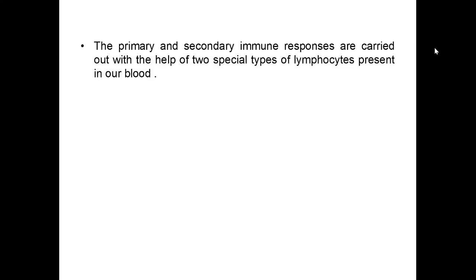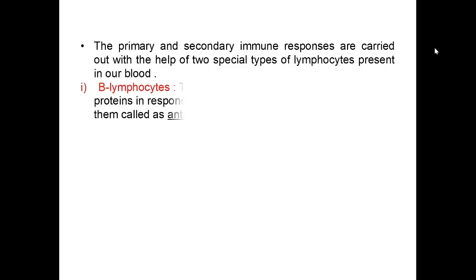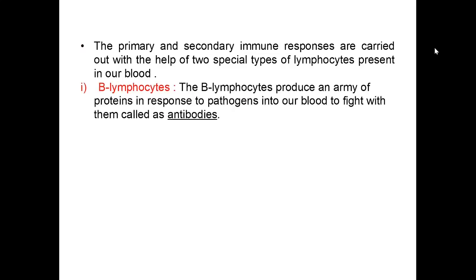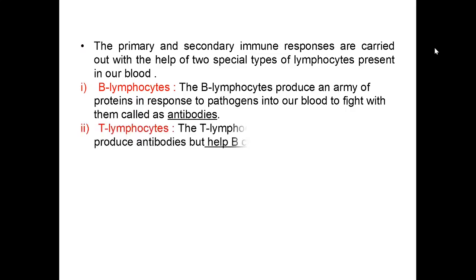The primary and secondary immune responses are carried out with the help of two special types of lymphocytes present in our blood. These are B lymphocytes, which produce an army of proteins called antibodies in response to pathogens, to fight with them. Then T lymphocytes, which do not produce antibodies themselves but help B cells to produce them.